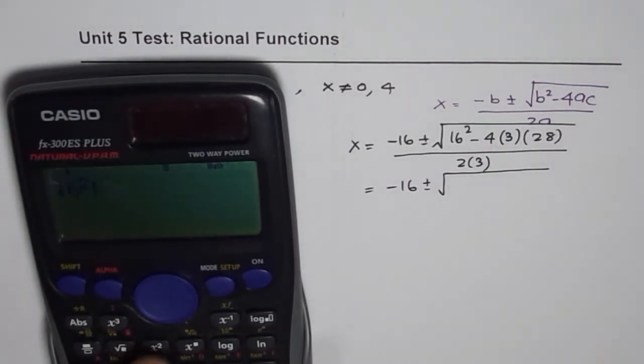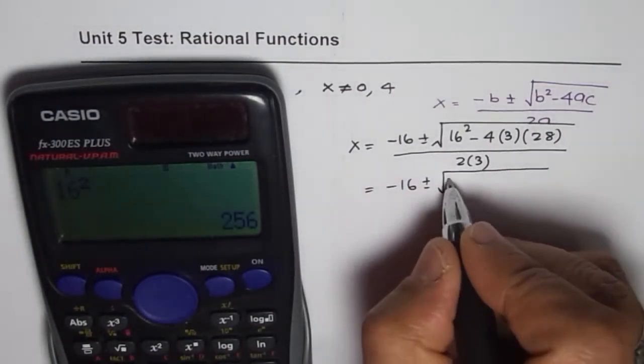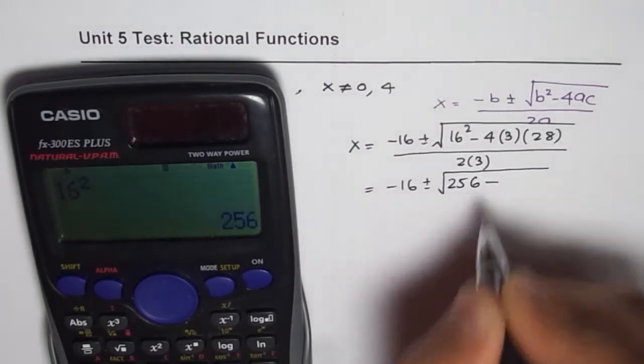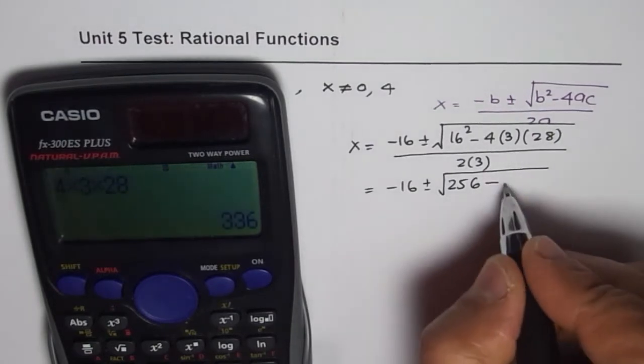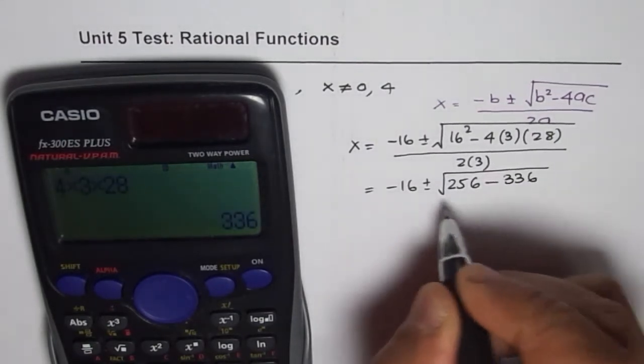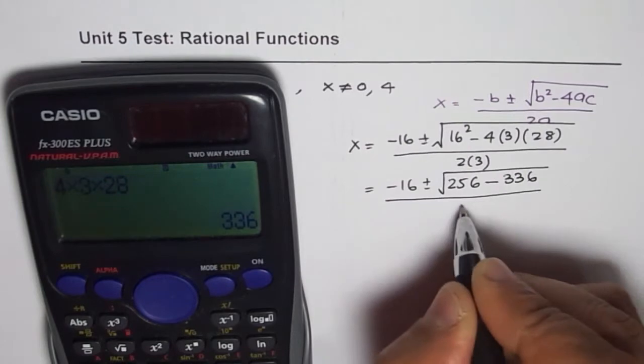We'll do 16 square equals 256 minus 4 times 3 times 28, which is 336, divided by 6.